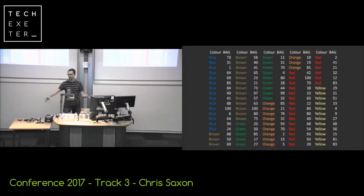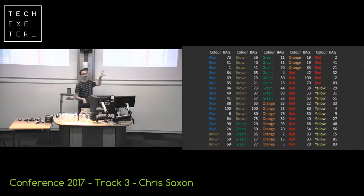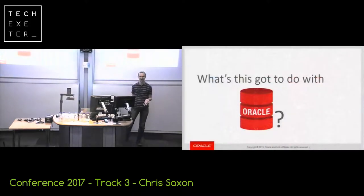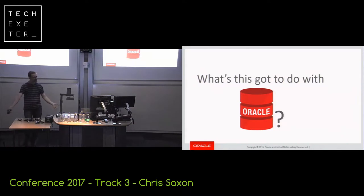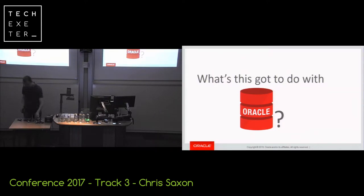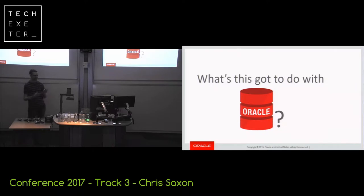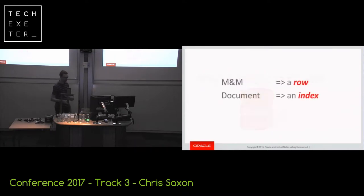So we've got two different approaches. One where I'm picking up several bags at once and looking at every single sweet to see whether or not it's red. The other where I've got a document stating the colour and location of every single sweet. What's this got to do with databases? My M&Ms are the real-world manifestation of a database table — every M&M is a row in the table with various properties such as colour, weight, and manufacturing dates, which are the columns. The document I created was an index on the colour column.